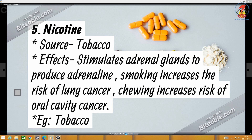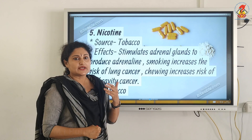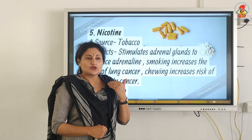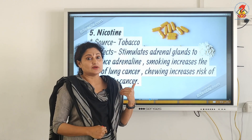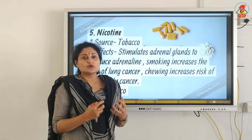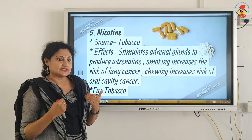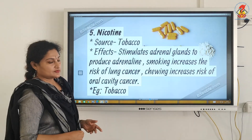The fifth category is the common nicotine. The source is tobacco — specifically the tobacco leaves, which are used for making cigarettes. It affects the adrenal glands, which produce adrenalin. Smoking increases the risk of lung cancer and chewing increases the risk of oral cavity cancer. This can be administered by two ways: either by smoking or by chewing. Smoking also increases the carbon monoxide content in the blood — carbon monoxide is a very toxic gas, and because of its presence, hemoglobin-bound oxygen decreases, causing oxygen deficiency in the body.